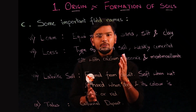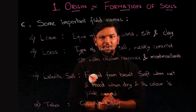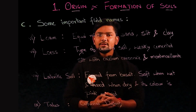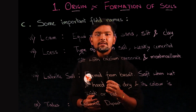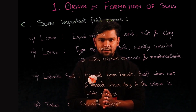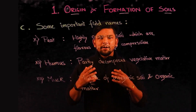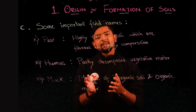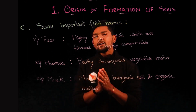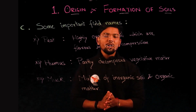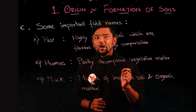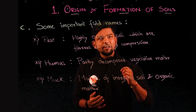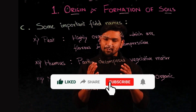Loess is a type of aeolian soil — weakly cemented silt with calcium carbonate and montmorillonite, generally found in semi-arid and arid regions. Lateritic soil is formed out of basalt; it is soft when wet and hard when dry, and its pink or red color is due to the presence of iron oxide. Talus is a colluvial deposit formed under the action of gravity, generally found at the bottom of a cliff. Peat is fully decomposed vegetative matter — highly organic, fibrous, and highly compressible. Humus is partly decomposed vegetative matter, while muck is a mixture of inorganic soil and organic matter. That concludes our chapter on origin and formation of soil.